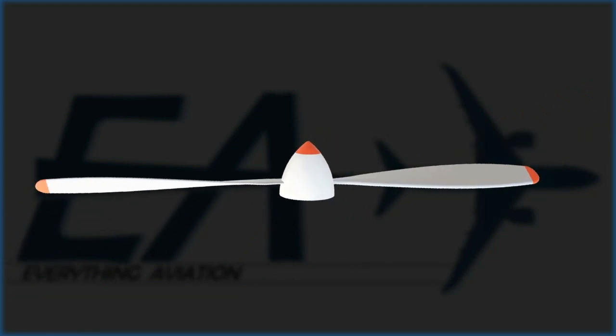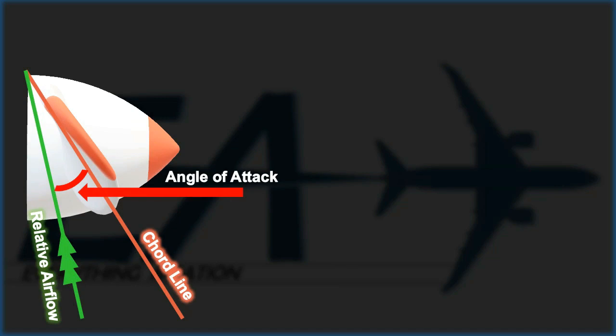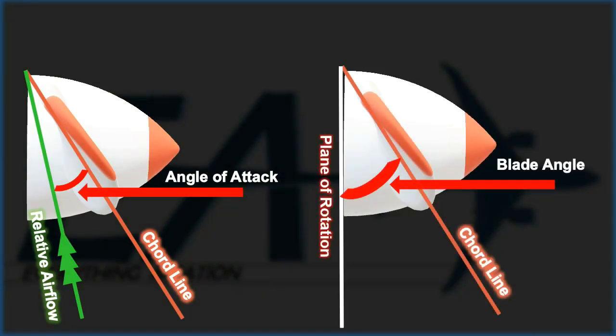And this causes the well-known but less understood term — asymmetric blade effect or P-factor — which to most pilots is the most mysterious of the left-turning forces acting on the airplane. Keep in mind that angle of attack is the angle between the chord line and relative airflow, and the blade angle is the angle between the chord line and the plane of rotation.